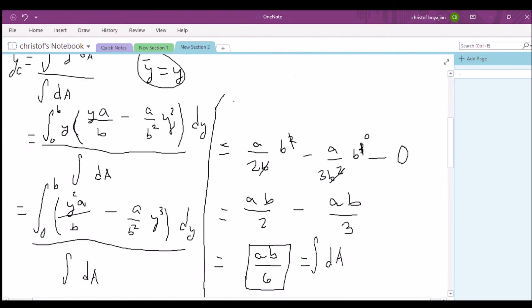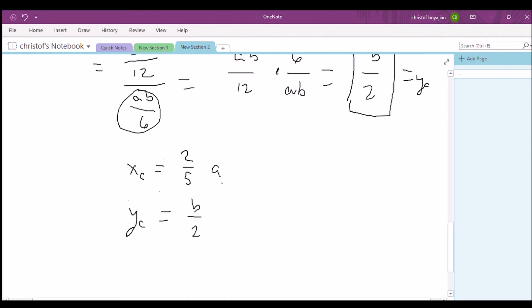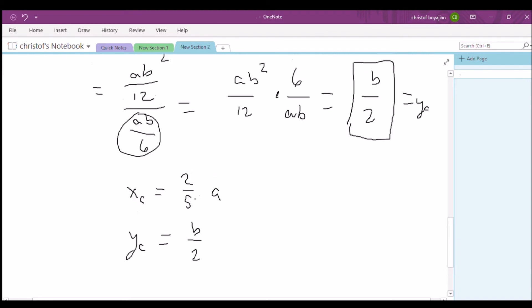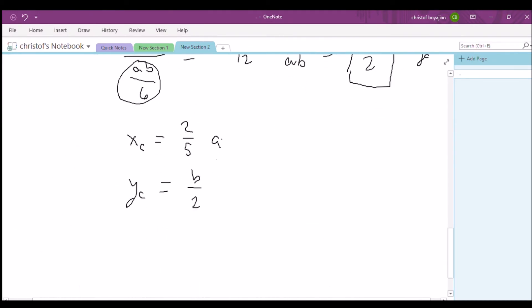Okay, so to recap: our x-coordinate, which we found in the previous video, was 2 fifths times a. Our y-coordinate of the centroid is b over 2. Now you can say a and b are any number, right. You could say a could be like 5, b could be 10. All you need to do is replace a with 5, for example. So if you said a is 5, you would end up getting that the x-coordinate would be 2.